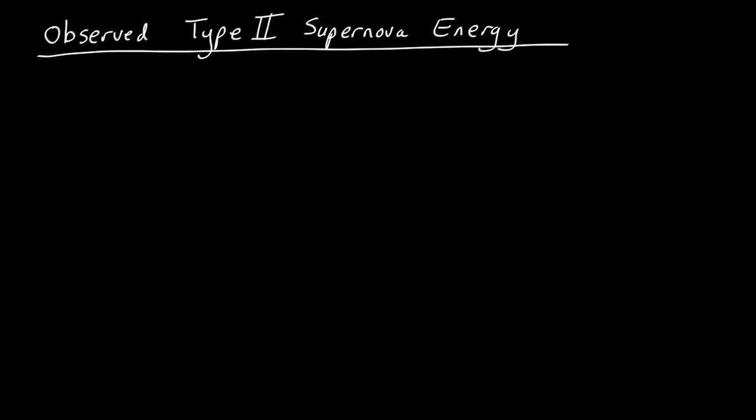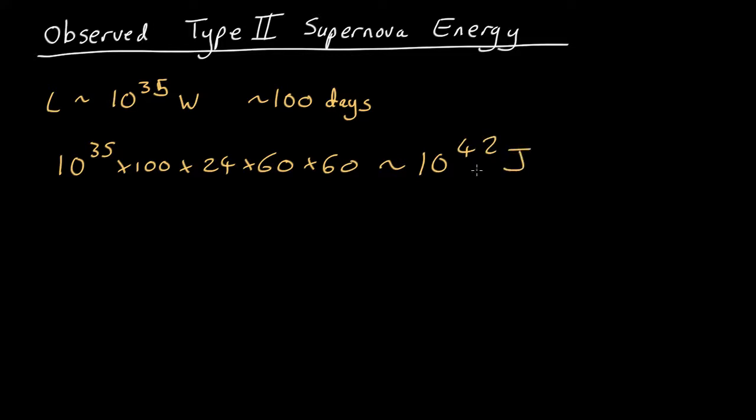Okay. Let's start off with the energy that comes out in the form of electromagnetic radiation, light, radio waves, gamma rays, etc. Now we know we have a luminosity of about 10 to the 35 watts for about 100 days. So what's the total energy output? Well, luminosity is a power. So that's energy per unit time, which is why it's measured in watts. So we just need to multiply this by the number of seconds in 100 days. So we get 10 to the 35 times 100 days times 24 hours in a day times 60 minutes in an hour times 60 seconds in a minute. And that comes out as about 10 to the 42 joules. Big, but a very tiny fraction of even the bounce energy, let alone the total energy.